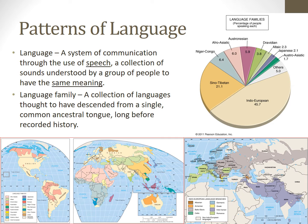Geographers often group languages together by their common ancestry — what they call a language family — which is a collection of languages thought to have descended from a single common ancestral tongue long before recorded history.